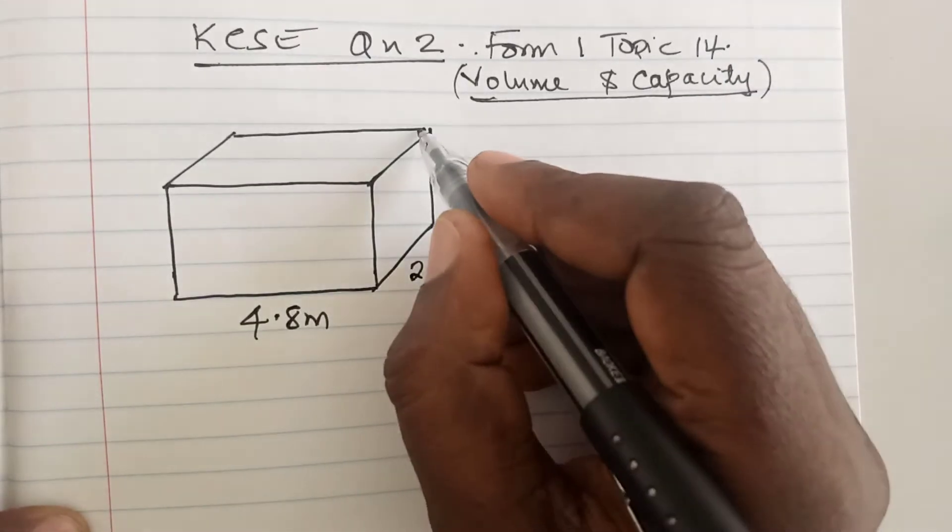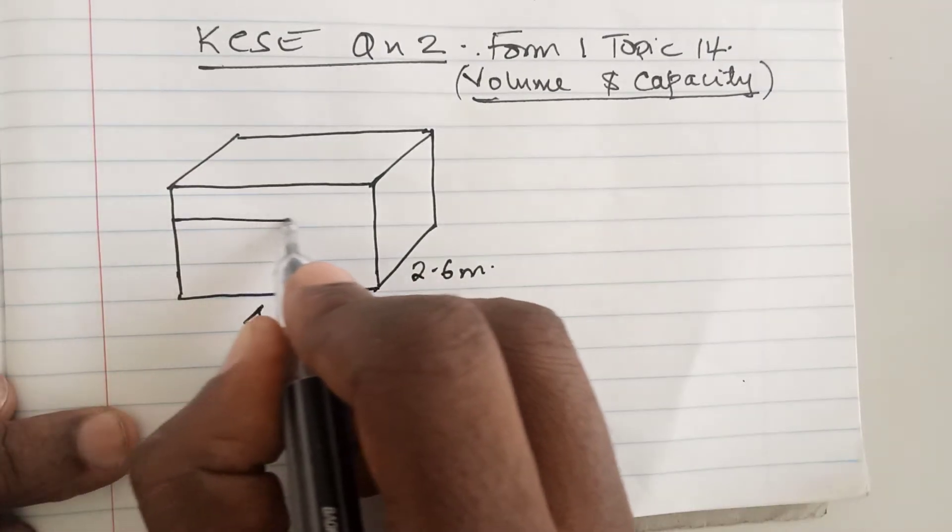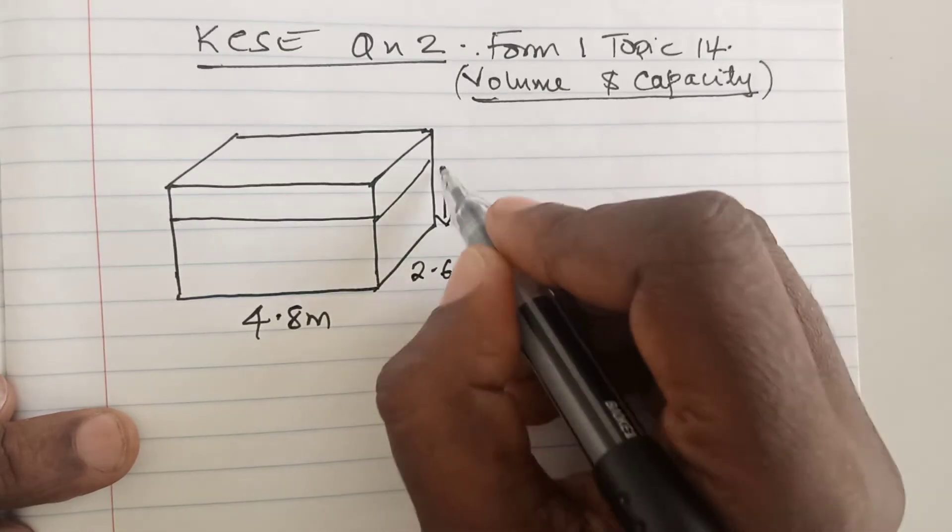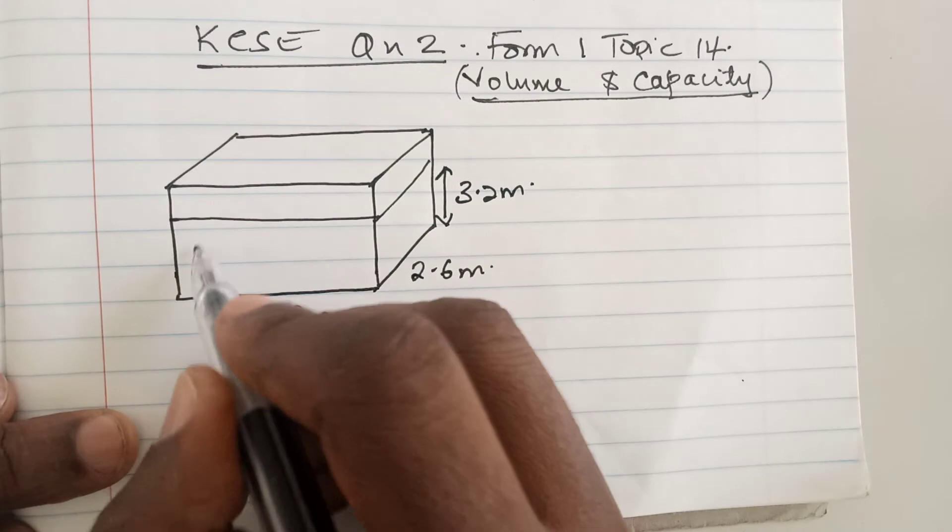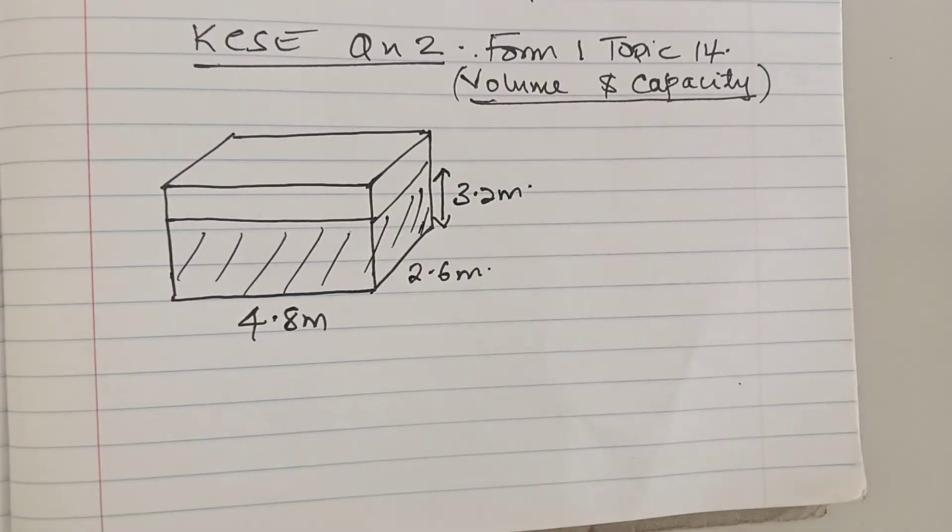Probably the height of the tank is bigger than 3.2, but we are told that water level reaches 3.2. So to us, let us have 3.2 meters there. All this is water. So the question is,